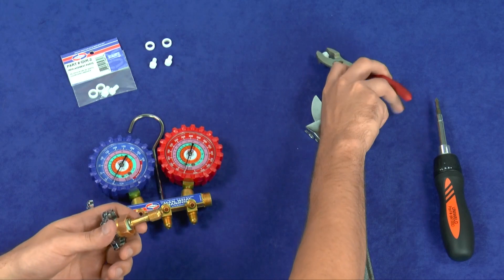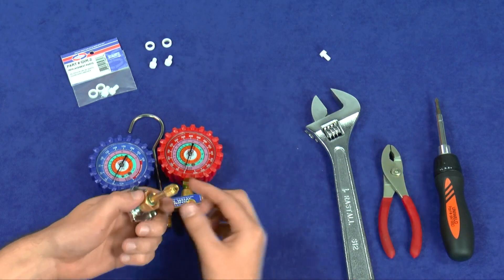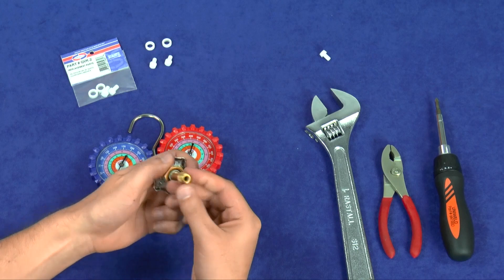The threads inside the valve stem are reversed, so removing the Teflon is clockwise and screwing it in is counterclockwise.